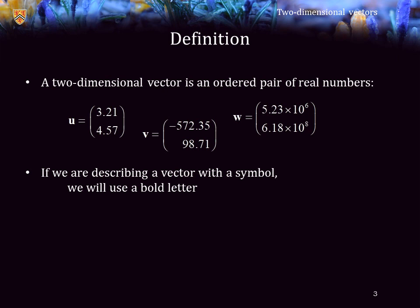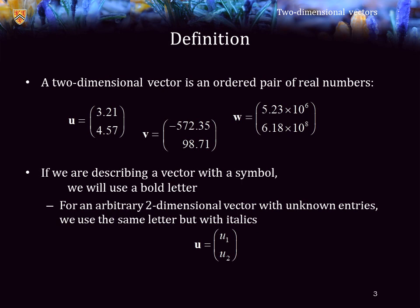If we are using a symbol to represent a vector, we will use a bold letter. In some cases, we may not know what the entries are, or the entries could be arbitrary. We may have an unknown vector, which we are attempting to find, or we may be allowing a vector to be any possible real two-dimensional vector. In this case, the entries of the vector will be represented by the same letter as the name of the vector, however, it will be an italicized letter with a subscript.